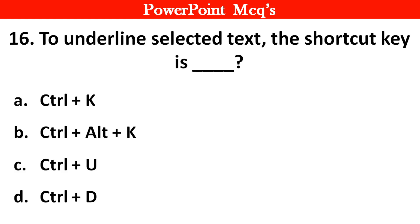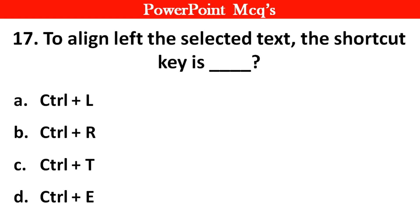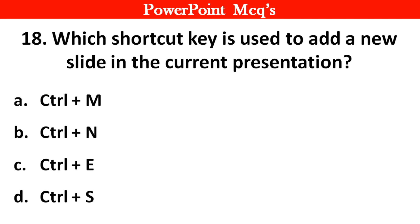Question no. 16: To underline selected text, the shortcut key is dash. The right answer is option C: Control plus U. Question no. 17: To align left the selected text, the shortcut key is dash. The right answer is option A: Control plus L.